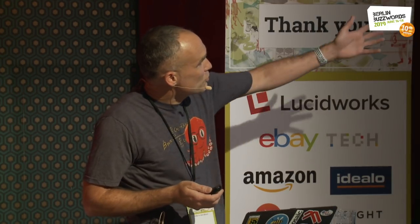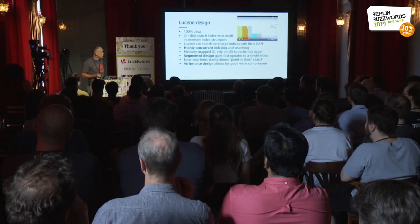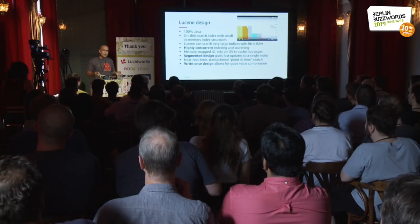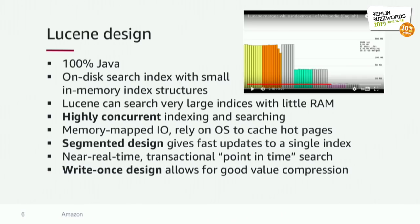Lucene has a segmented architecture. New segments are written, and over time small segments get merged together in the background into bigger segments — there's a fun YouTube video showing how that process works. It has a near-real-time architecture: you can search all documents indexed up to a point, continue indexing while searching, and every few seconds open a new reader for a point-in-time view. That write-once design gives very good index compression since Lucene knows the written values won't be updated.